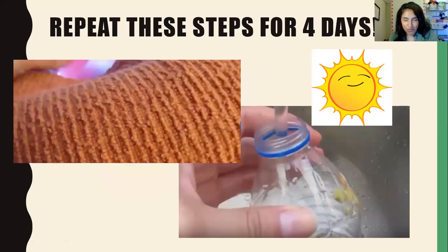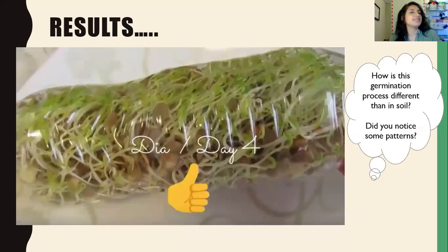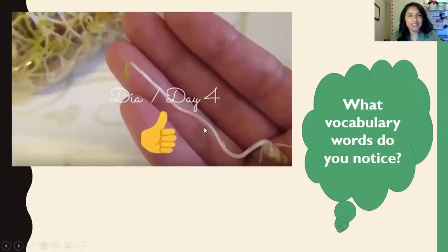After you've done this for four days, you're going to notice something super cool that you're probably not going to believe. Are you ready for the results after four days? Look at that — this is called germination, friends. We germinated these seeds into bean sprouts — they sprouted without soil. So how is this process different than soil? We're going to discuss that on our meetings on Wednesday and Friday. What were some patterns that you noticed? We're going to write all of this down in Google Classroom. This is what day four looks like — it's completely sprouted.